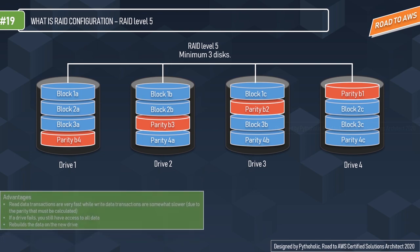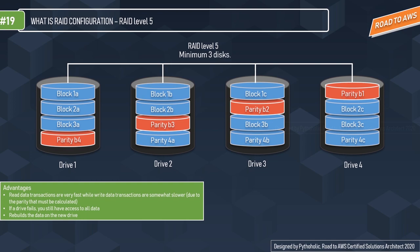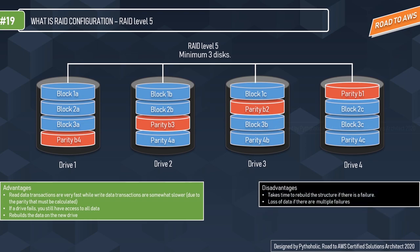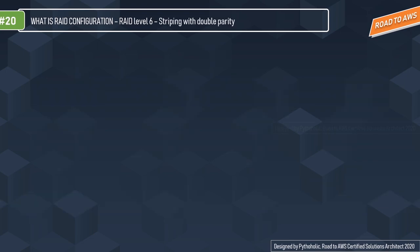With RAID 5, read transactions are very fast while write transactions are somewhat slower due to parity calculation. If a drive fails, you still have access to all data and it rebuilds on a new drive. The disadvantages are that rebuilding takes a lot of time, and if there are multiple drive failures you will lose data because you cannot recalculate the parity blocks.